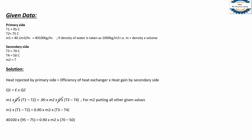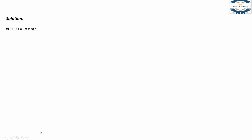Substituting all values: M1 = 40,100 kg/hr, T1 = 95°C, T2 = 75°C, efficiency = 0.90, T3 = 70°C, T4 = 50°C. The left side: 40,100 × (95 − 75) = 40,100 × 20 = 802,000. The right side: 0.90 × M2 × (70 − 50) = 18 × M2. Solving for M2: M2 = 802,000 ÷ 18 = 44,555.56 kg/hr.